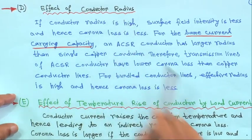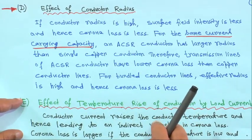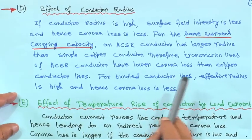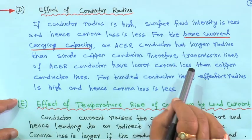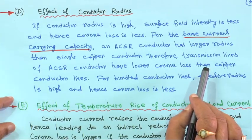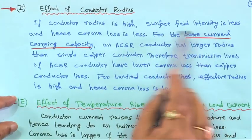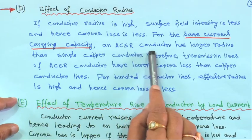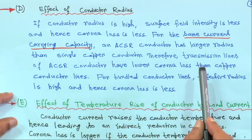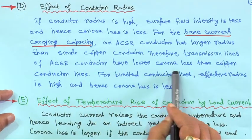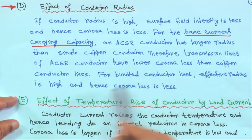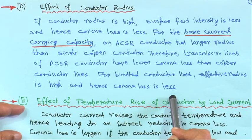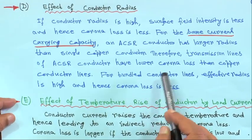Next is the effect of conductor radius. The potential gradient at the surface of a conductor is high if the radius is small (E = q / 2πε₀r). If radius is large, surface field intensity is less, hence corona loss is less. For the same current-carrying capacity, an ACSR conductor has a larger radius than a single copper conductor, so ACSR transmission lines have lower corona loss. For bundle conductors, the effective radius is high, hence corona loss is less.